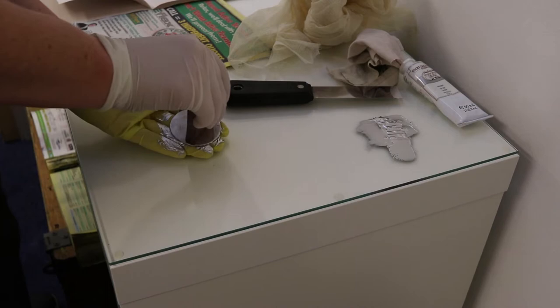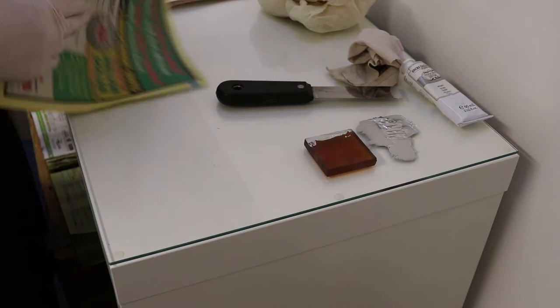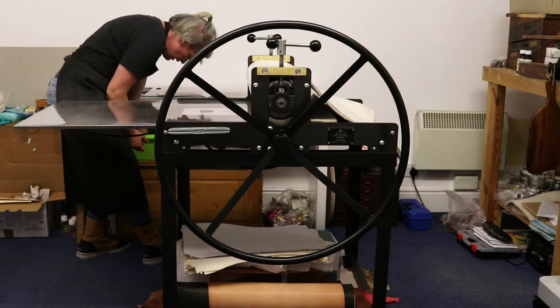The next step is to wipe the ink with a balled-up piece of tarlatan, pushing at the same time to really get the ink down into grooves, and then you can polish the surface back with a piece of paper. Phone book paper works really well for this. I also wipe around my beveled edge with a rag and line up the plate on my press.